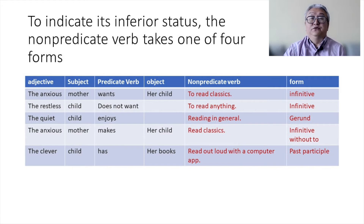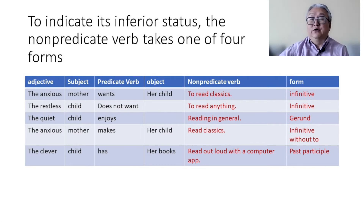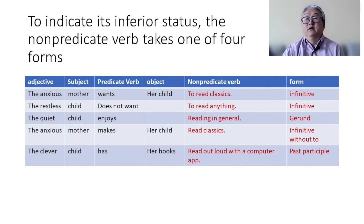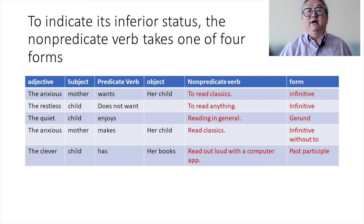The anxious mother makes her child read classics. That is the infinitive without 'to' — the third verb form. And finally, the clever child has her books read out loud with a computer app, so she uses a computer app to read her books. This uses 'has her books read' — that is the past participle form. So basically there are only four forms for the verb to take after the predicate verb. The non-predicate verb forms are one of these four forms, no matter how you look at it.